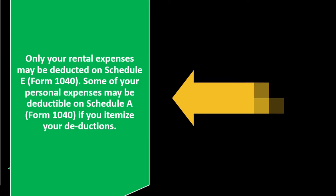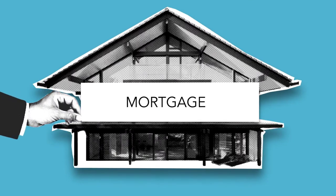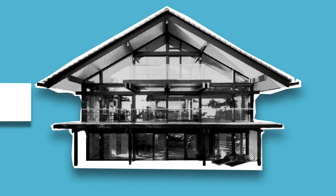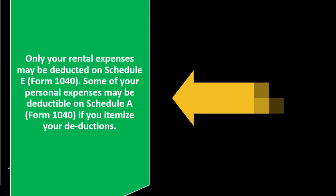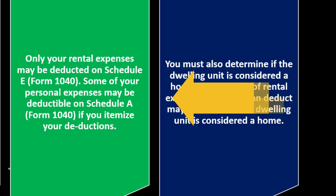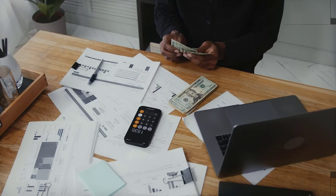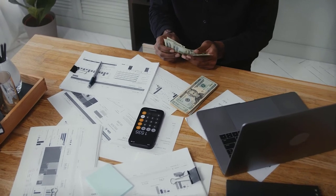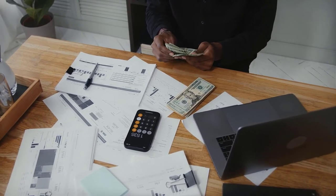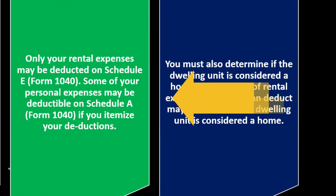Items like mortgage interest, for example, might be split between Schedule E and Schedule A, and similarly property taxes. Other expenses specific just to the rental property, which aren't typically deductible on the personal side — those are the ones we really want to be deductible on the rental property side, because otherwise we won't get the deduction at all.